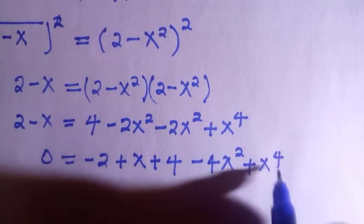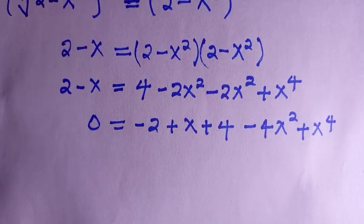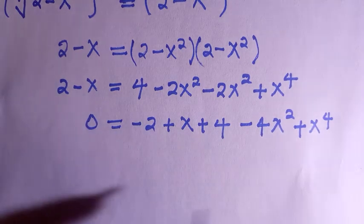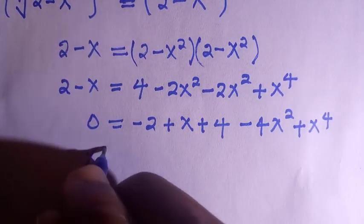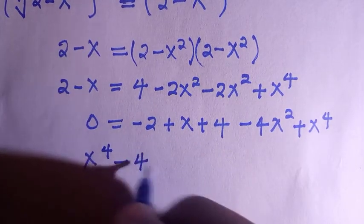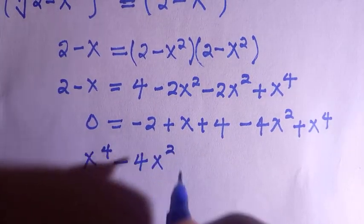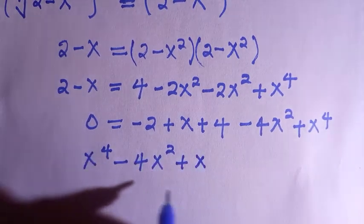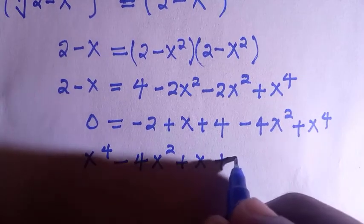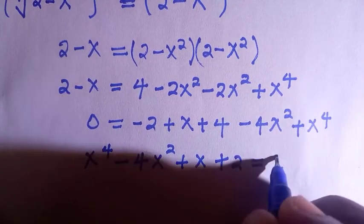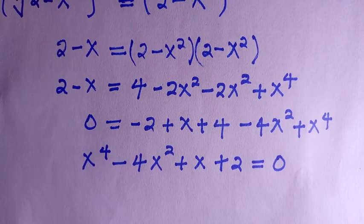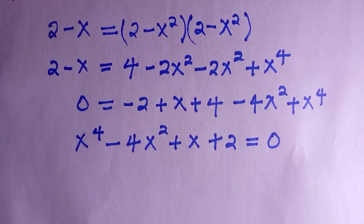Then we have plus 4, and negative 2x squared minus 2x squared is negative 4x squared. The last term is plus 4x to the power of 4. Transferring everything across, the transfer doesn't affect the sign — it's just like replacing 0 with other values on the right-hand side.